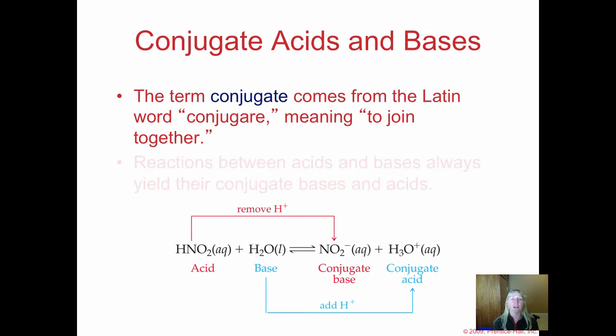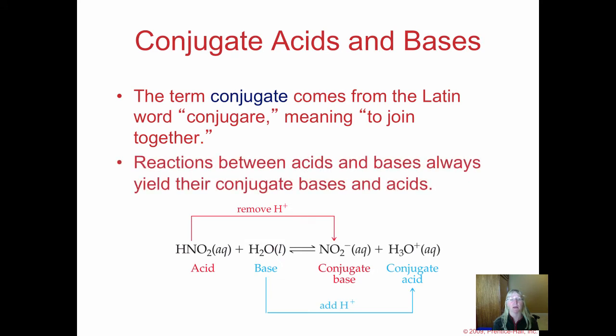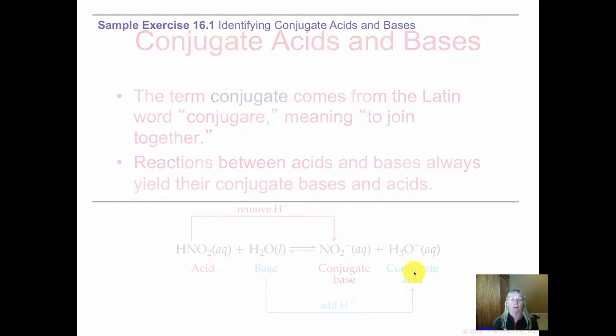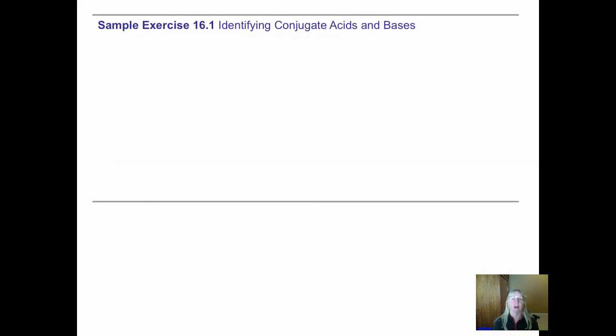The terms conjugate acid and conjugate base are simple to understand. When you have an acid, it donates a hydrogen, and the substance left behind—in this case, the nitrite ion from nitrous acid—is the conjugate base. Here, water accepts a hydrogen, so it's defined as the base, but what the water becomes is a conjugate acid. Reactions between acids and bases always yield a conjugate acid and a conjugate base.